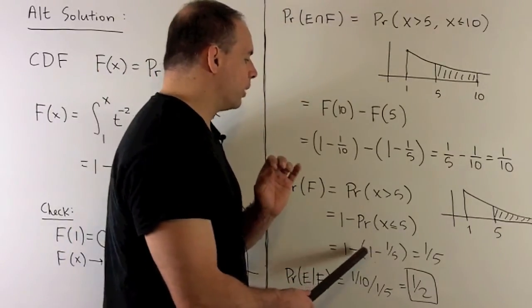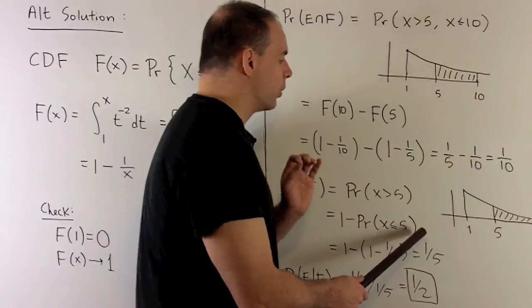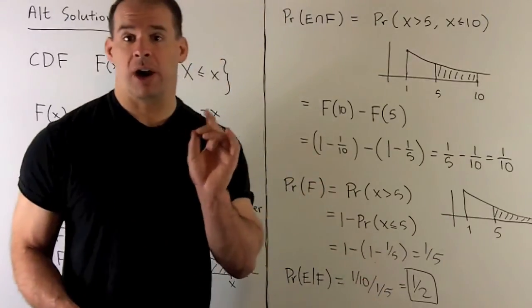So, we're gonna have 1 minus 1 minus 1 over 5, which is 1 fifth, which agrees with our answer from before.